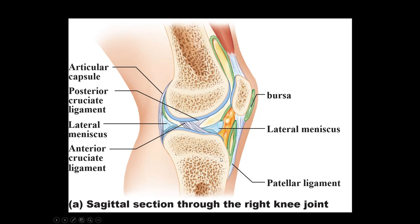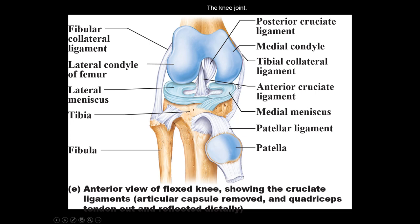The second picture shows the two collateral ligaments — you can still see the ACL and PCL. The fibula is always lateral, so find it to identify the lateral meniscus and by process of elimination the medial meniscus. Your book calls the lateral one the fibular collateral ligament (also called the lateral collateral), and the medial one the tibial collateral ligament (also called medial collateral). The names can differ depending on who you're working for.